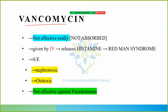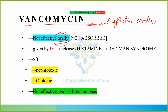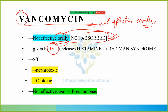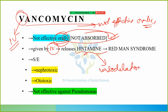Now we talk about vancomycin. Vancomycin is not effective orally — it is not absorbed orally. So vancomycin is given IV. Remember: vancomycin has 'V', so it is given IV. Vancomycin releases histamine, and histamine release causes vasodilation, which increases blood flow.